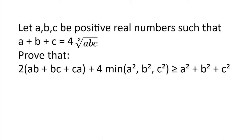Let A, B and C be positive real numbers such that A plus B plus C is equal to 4 multiplied by the cubic root of A multiplied by B multiplied by C. Prove that 2 multiplied by AB plus BC plus CA plus 4 multiplied by the minimum of A squared, B squared and C squared is greater or equal to A squared plus B squared plus C squared.